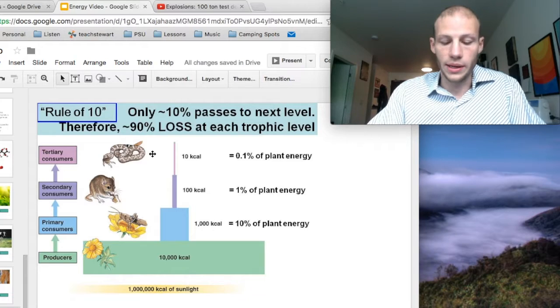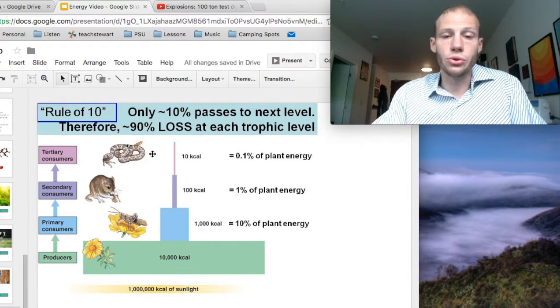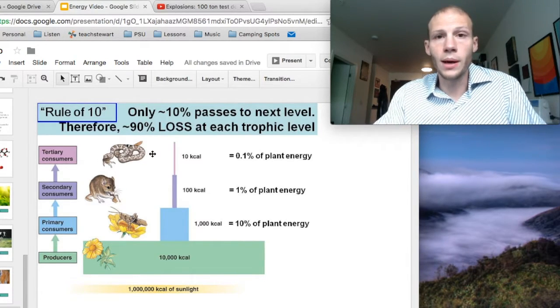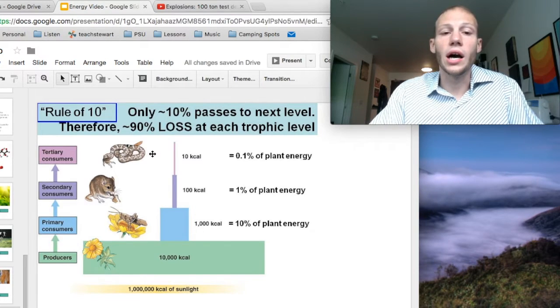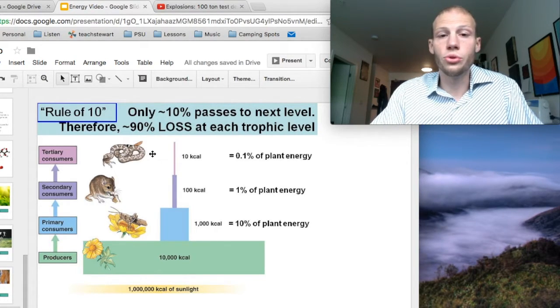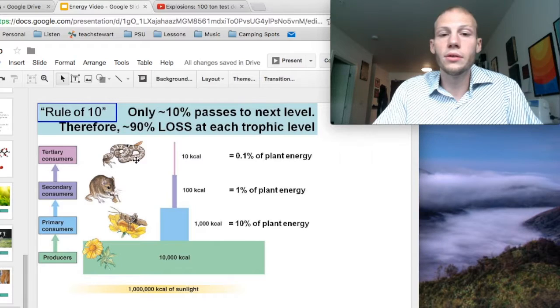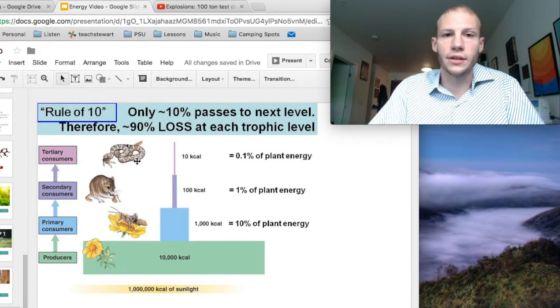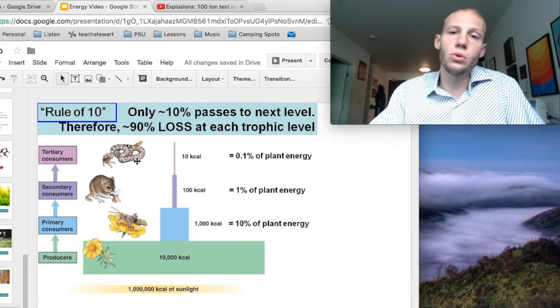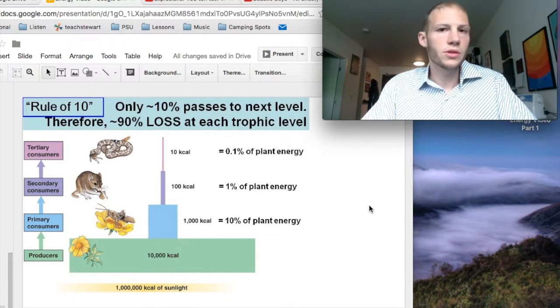So, in class this week, you guys are going to be working on building a food web, and you're going to use that food web to explain why the whole world is not covered in tigers. Why are there so few predators in the world?